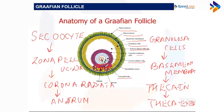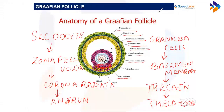Regarding the corpus luteum: its fate is decided by whether fertilization has taken place. If fertilization occurs, a signal tells it to maintain itself for around three months, continuing to release hormones. If fertilization does not take place, the corpus luteum degrades into a whitish scar called the corpus albicans.